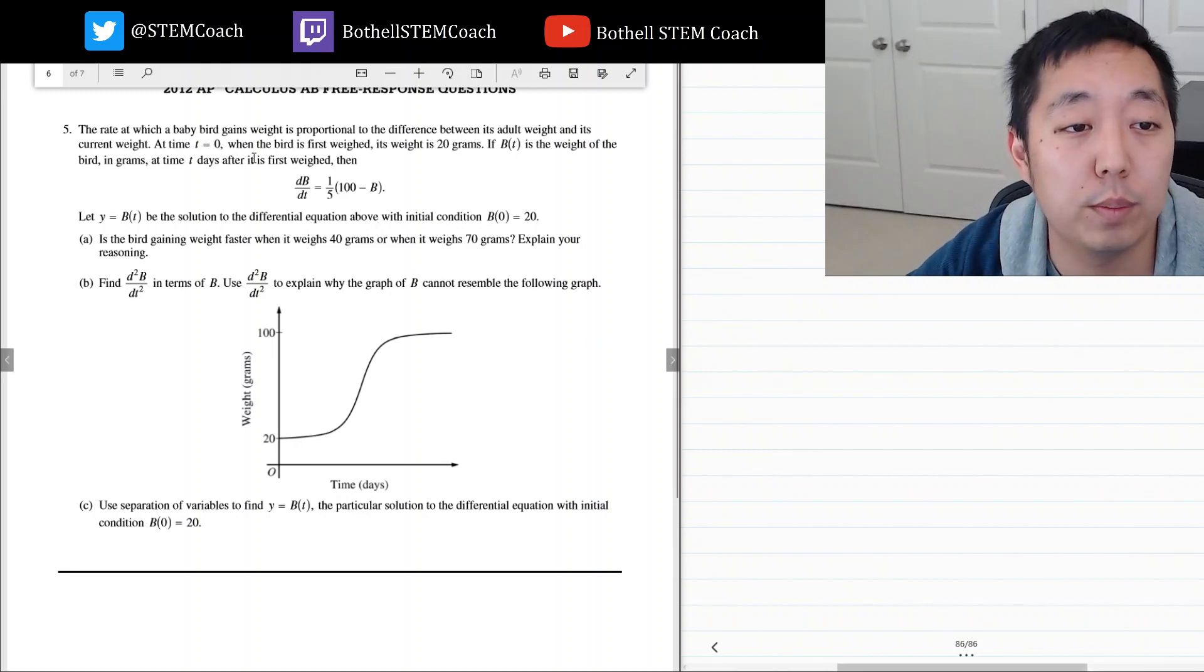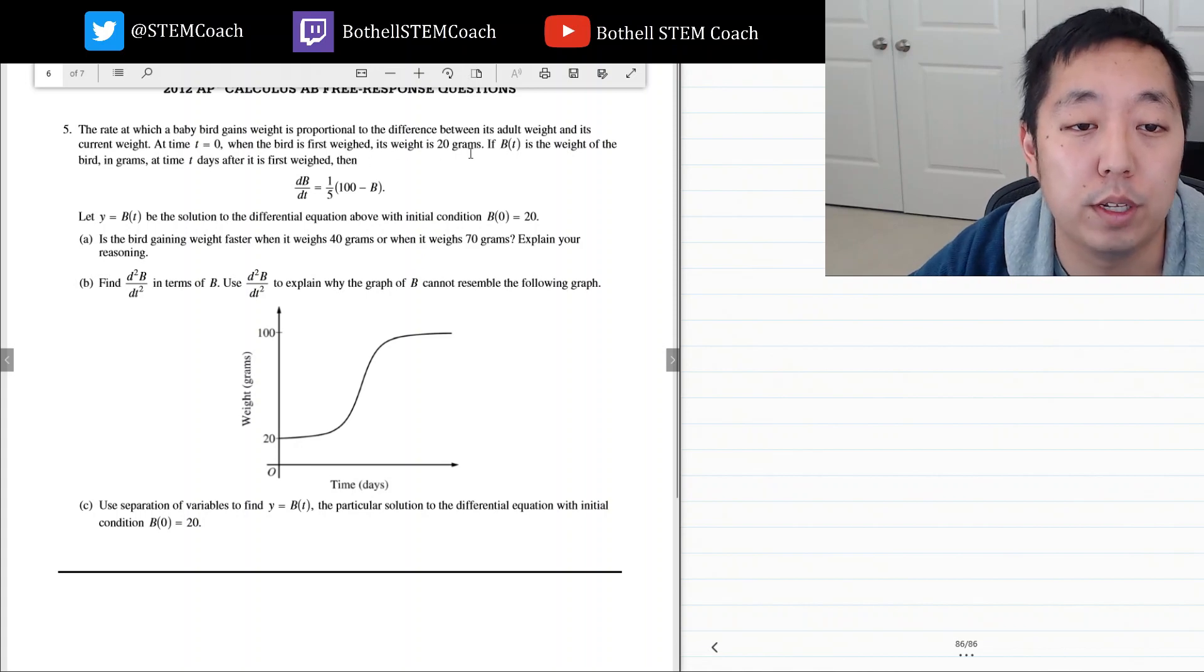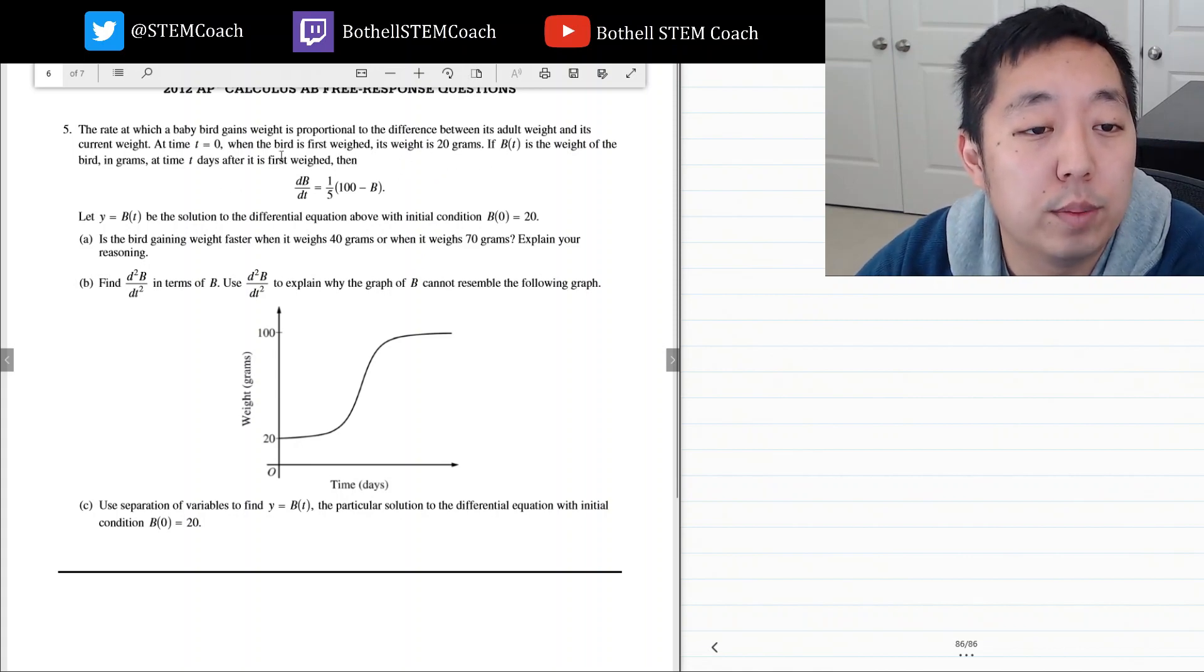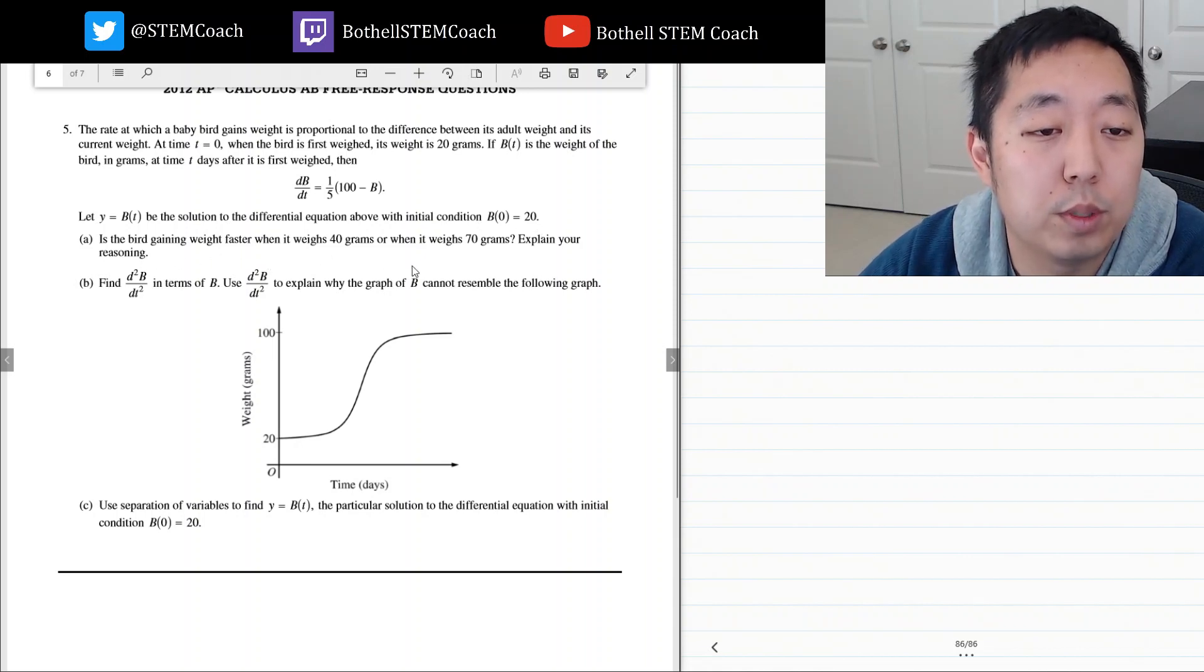The rate at which a baby bird gains weight is proportional to the difference between its adult weight and its current weight. When the bird is first weighed, its weight is 20 grams. If b of t is the weight in grams, then this is the relationship. Let y equals b of t be a solution to the differential equation with the initial condition b of 0 equals 20. Is the bird gaining weight faster when it weighs 40 grams or when it weighs 70 grams? Explain your reasoning.